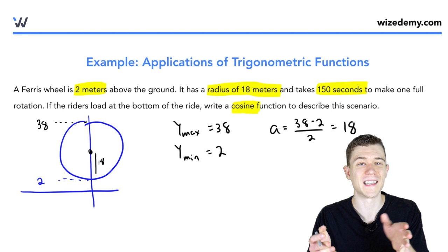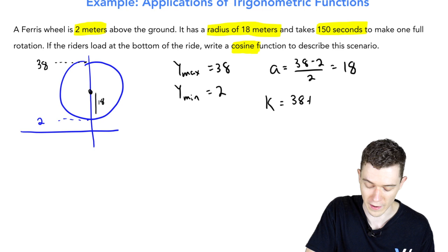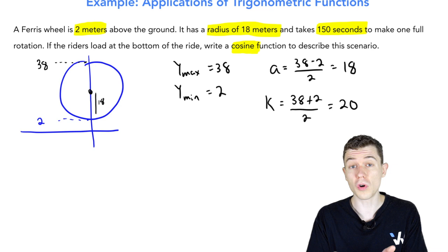We also know the k value from this. The k value is the sum of these and taking the division. 38 plus 2 over 2. 40 over 2 is 20. The way we've drawn this along the y axis, we won't have a horizontal shift. So h will be 0.